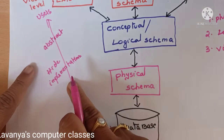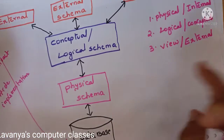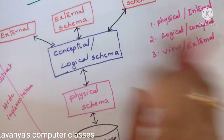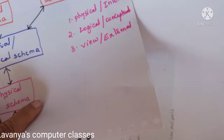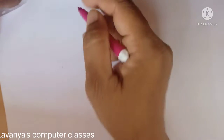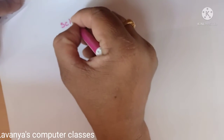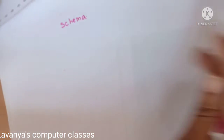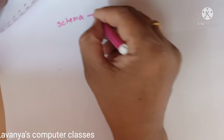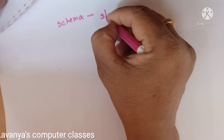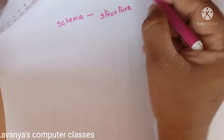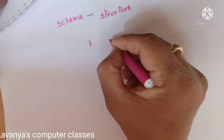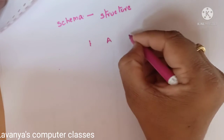The database is abstracted for users, but the total implementation is hidden from them. This is the three-level architecture. Before going into the three levels, we need to know what a schema is. Schema means it is the structure of the database — the skeleton of the database — describing how the data is stored and in which format.